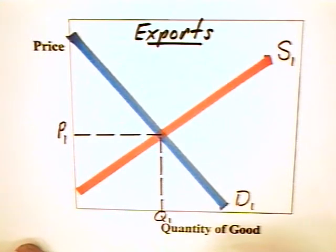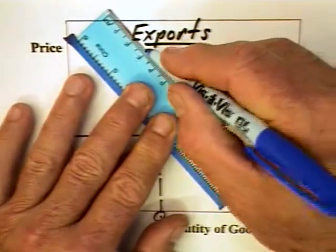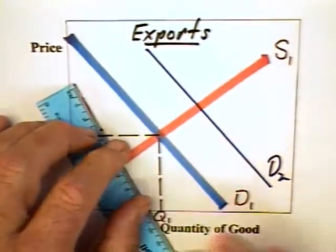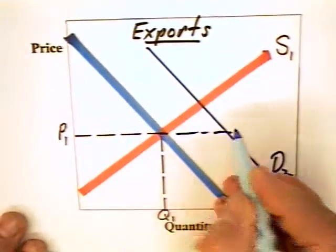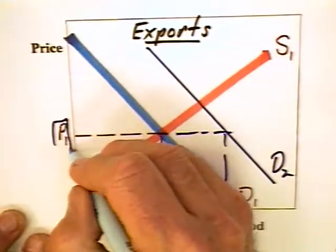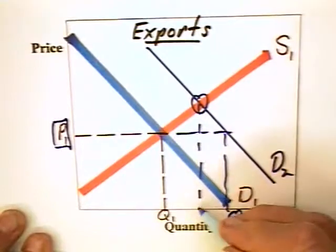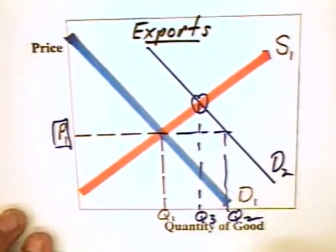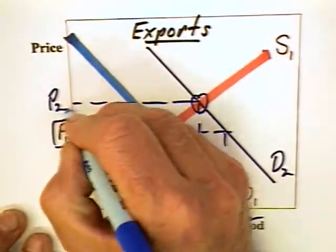If in fact we have trade between this country and another country, this good is going to be exported. This means that the demand curve for the good is going to rise with the increase in demand reflecting the foreign consumption. The result is if the price remains at P1, the quantity demanded is going to go to Q2, but of course the price will rise and we will end up at this intersection here with a quantity demanded and supplied equal to Q3.